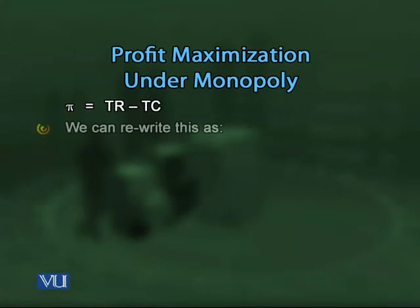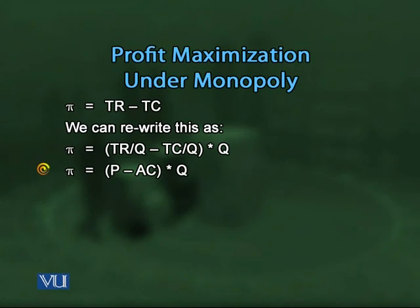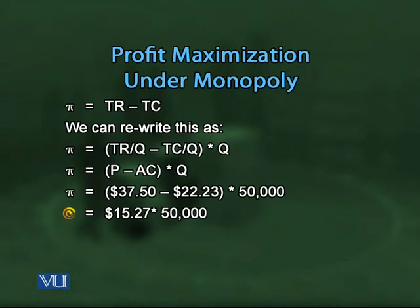The profit equation is: π = TR − TC, which can be rewritten as π = (TR/Q − TC/Q) × Q = (AR − AC) × Q = (P − AC) × Q. At the profit maximizing level, price is approximately $37.50 and average cost is $22.23. Substituting these values and multiplying by 50,000 units gives maximum profit of $763,750.